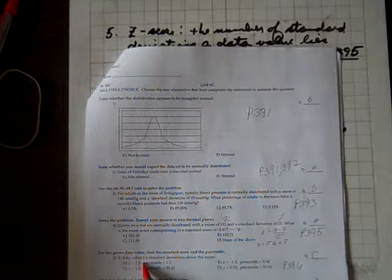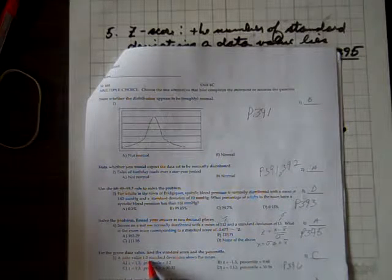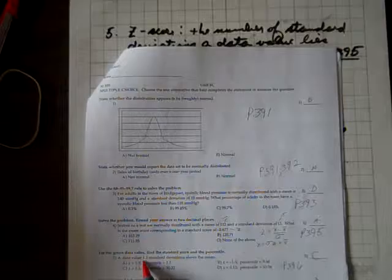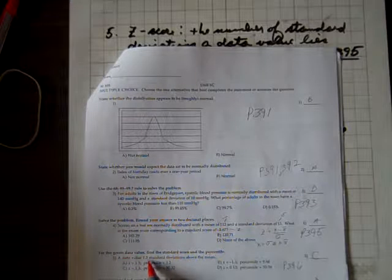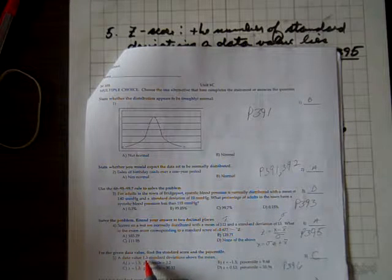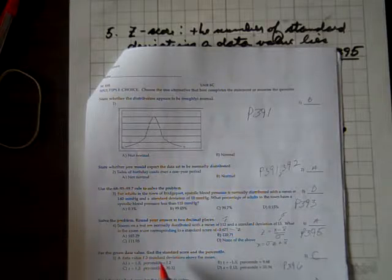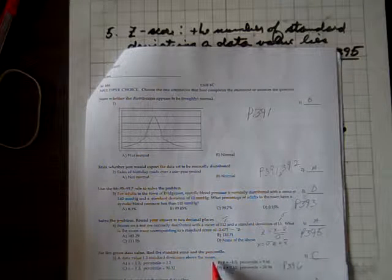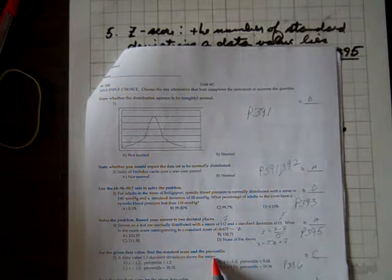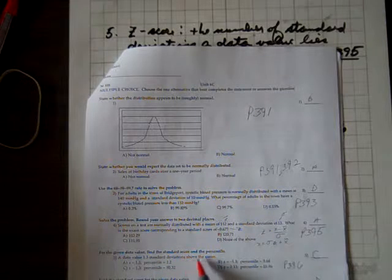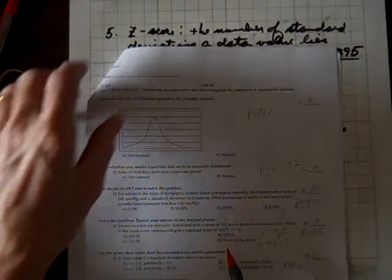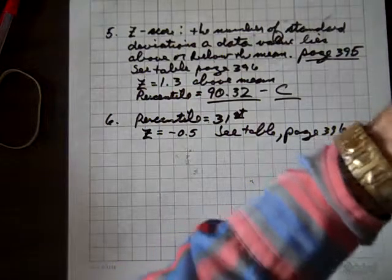We're given a data value of, we're given the Z score. This data value is 1.3 standard deviations above the mean. So we're given the Z score. We have to find the corresponding percentile. So we'll use the table.